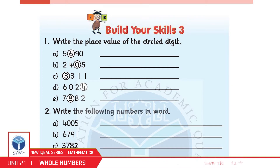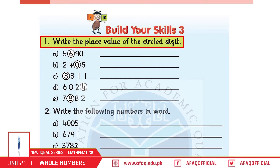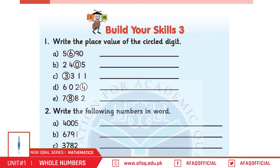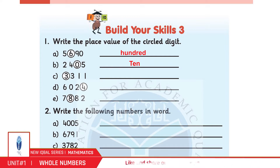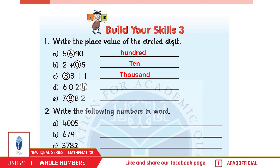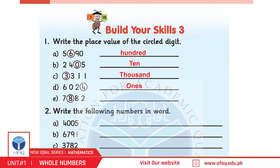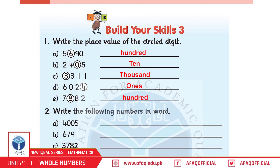Build Your Skills 3, Page 9, Question 1: Write the Place Value of the Circled Digit. A: 6 in 5690 — Hundreds. B: 0 in 2405 — Tens. C: 3 in 3311 — Thousands. D: 4 in 6024 — Ones. E: 8 in 7882 — Hundreds.